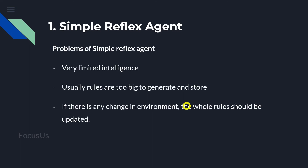Now let's look at the problems of simple reflex agents. One major problem is that it has very limited intelligence. Since a simple reflex agent only knows what is written in the rules, its actual intelligence is very low. Another problem is that the rules are usually too large to generate and store — in real-life scenarios, simple reflex agents would need thousands of rules to work properly, which is very difficult to achieve for complex tasks.